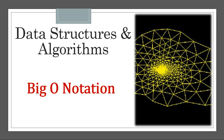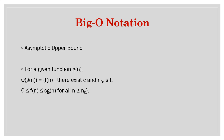In the previous video we had seen that there are three different ways of doing asymptotic analysis of an algorithm using three different types of notations. One of them was Big O notation, which is the most widely used asymptotic notation for the running time of an algorithm. In this video we will explore what Big O notation is — it is an asymptotic notation that gives an upper bound on the running time of an algorithm.